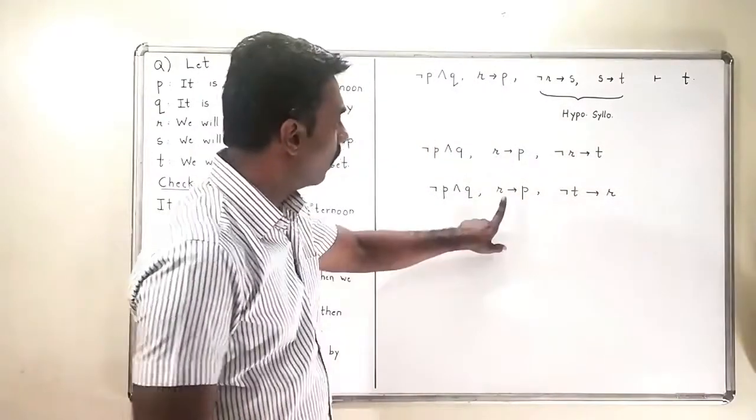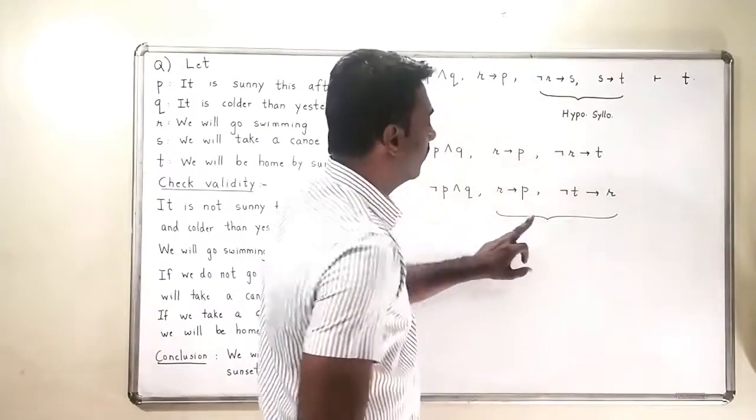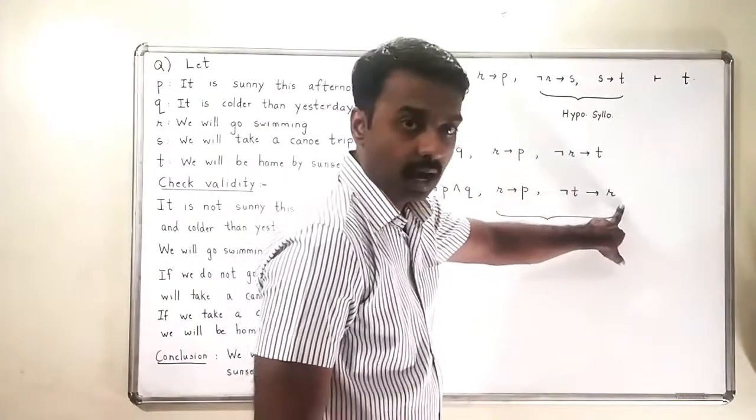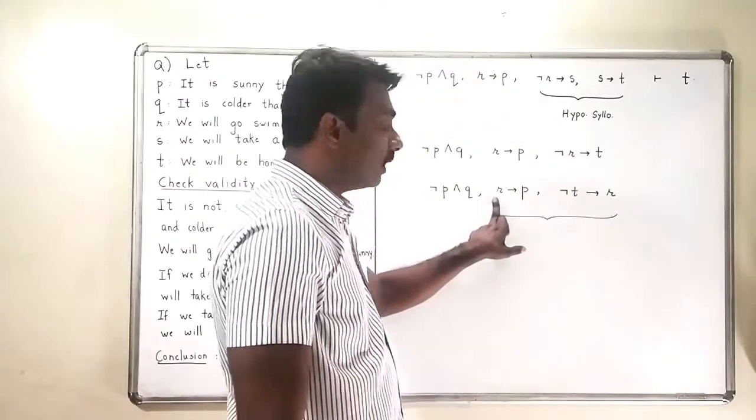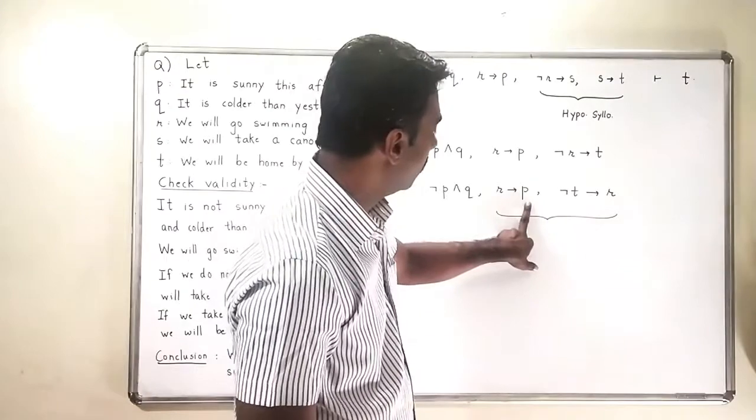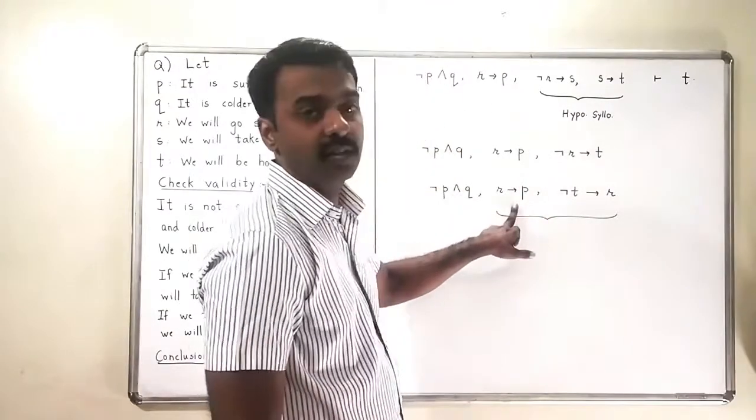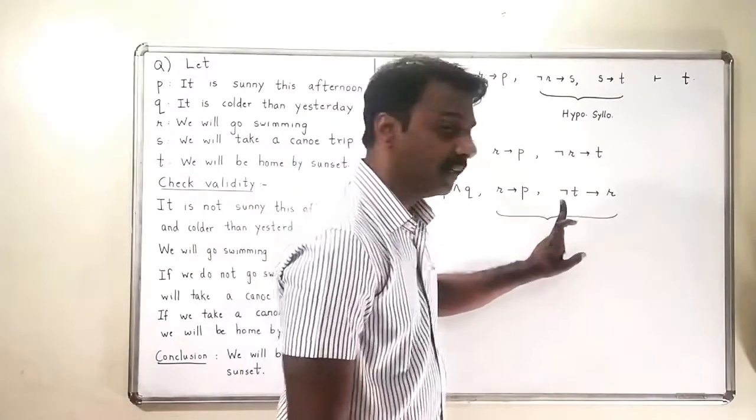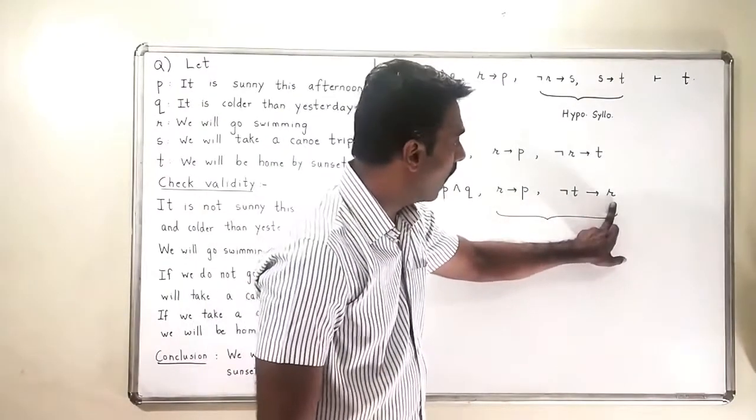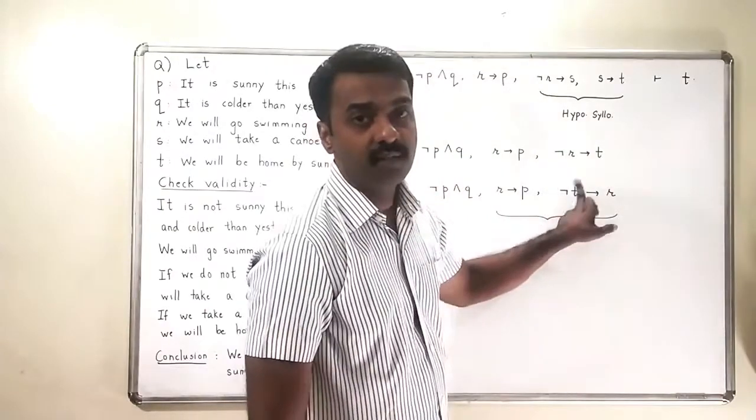Now if we look at these two statements, what is happening? Negation T implies R, and R is implying P. So again by hypothetical syllogism, negation T implies P. Let me repeat: negation T is becoming R and R is becoming P, which means negation T will become P.